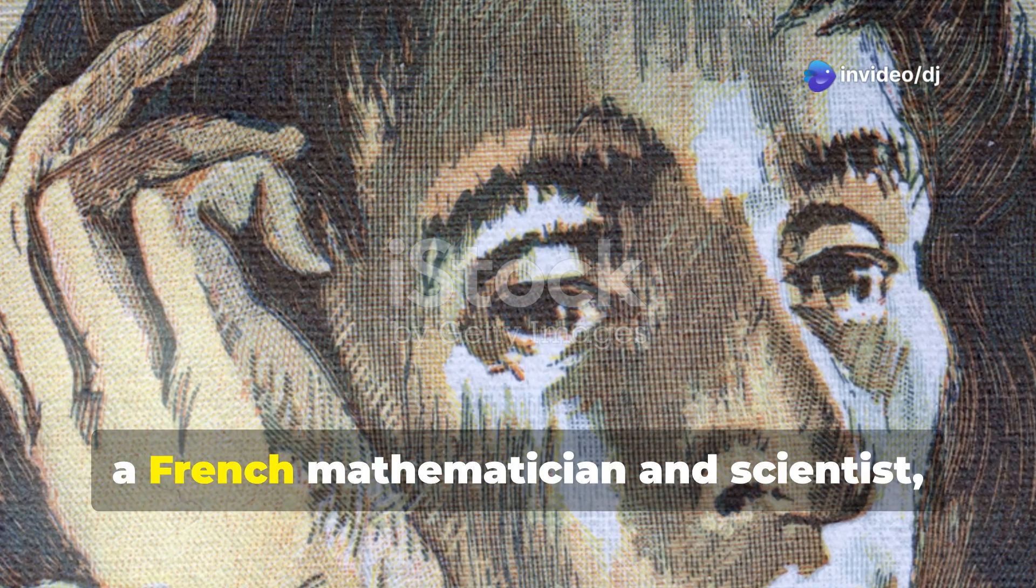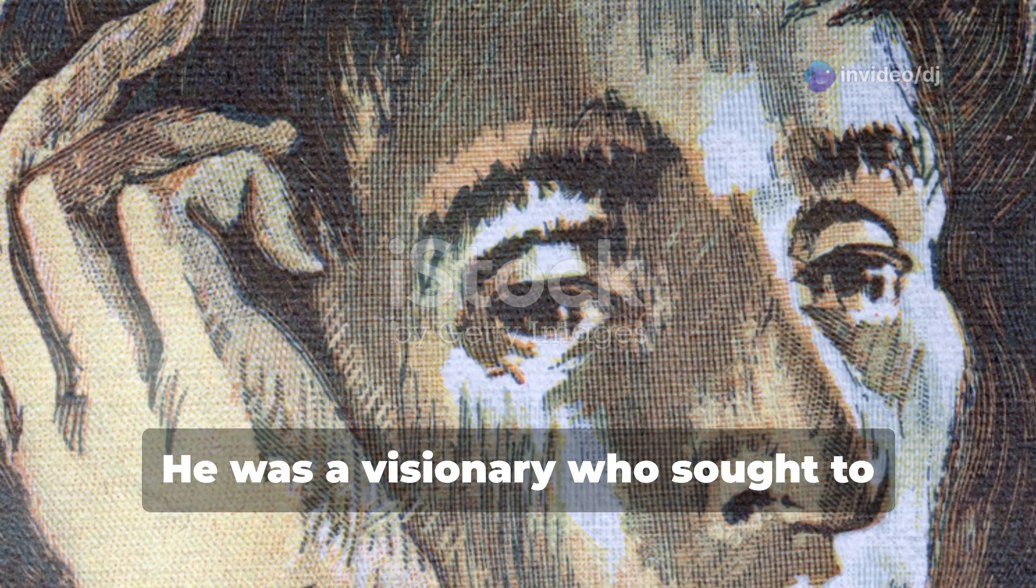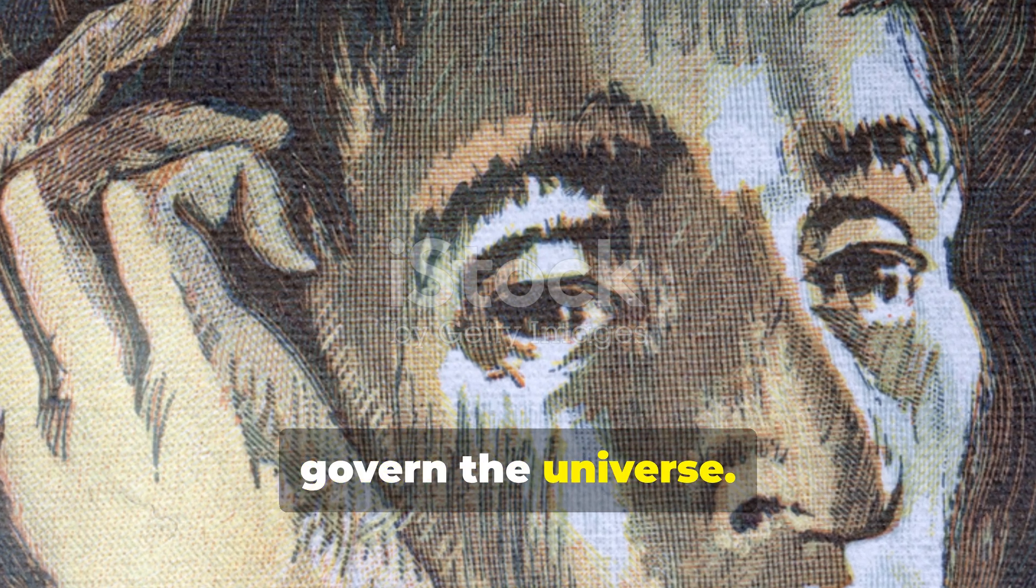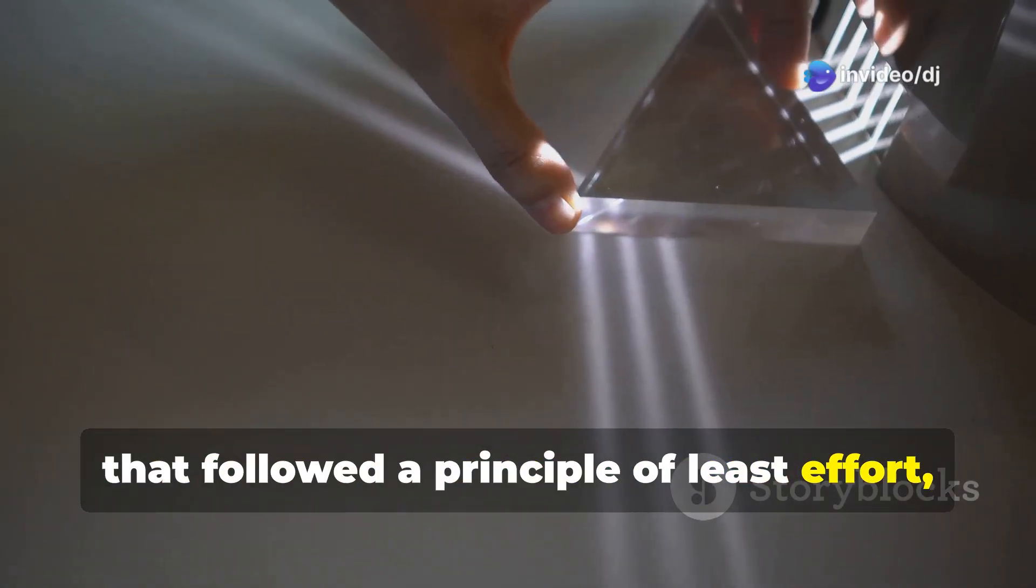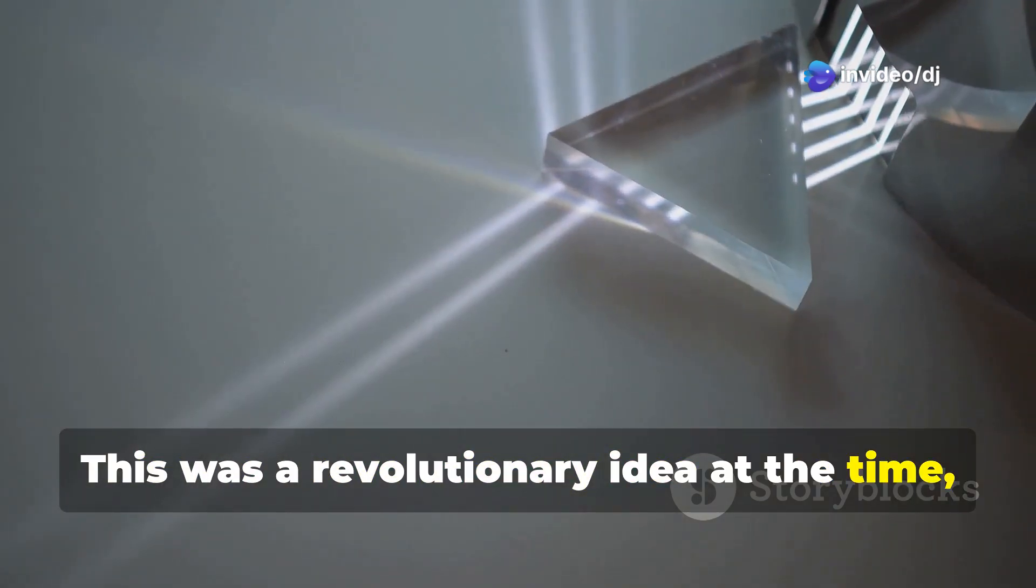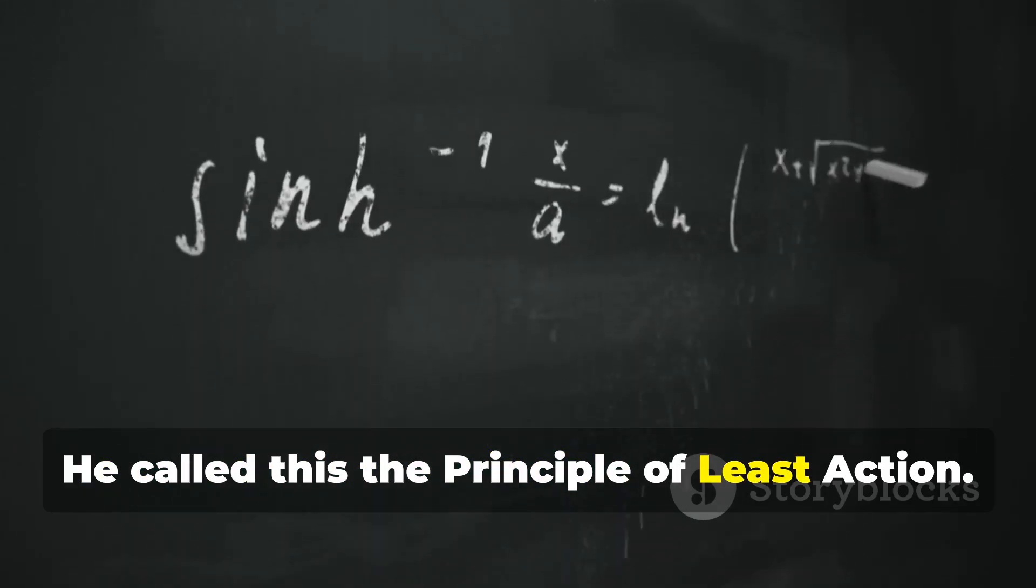Pierre-Louis Maupertuis, a French mathematician and scientist, dared to go even further. He was a visionary who sought to understand the underlying principles that govern the universe. He proposed that it wasn't just light that followed a principle of least effort, but everything in the universe. This was a revolutionary idea at the time, challenging the conventional wisdom of his era. He called this the principle of least action.